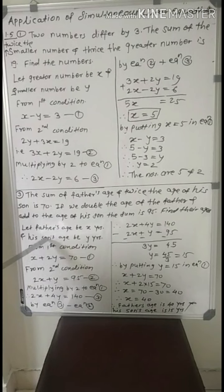So write the answer: father's age is 40 years and his son's age is 15 years. So write the answer with its unit. Like this way, you have to solve the remaining examples and also solved examples. Some activities are given.